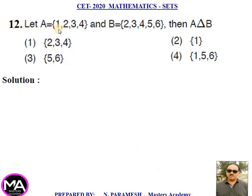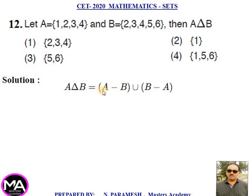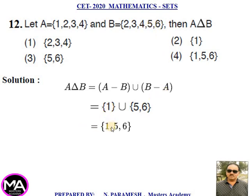12th question. Let set A = {1, 2, 3, 4} and set B = {2, 3, 4, 5, 6}. Find the symmetric difference A Δ B. Solution: A Δ B = (A − B) ∪ (B − A). A − B = {1} and B − A = {5, 6}. Therefore A Δ B = {1, 5, 6}. That is option fourth.